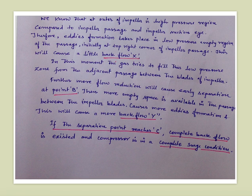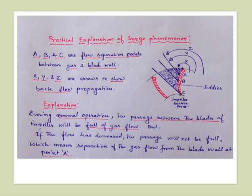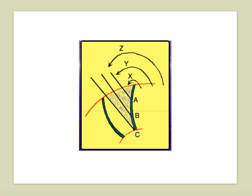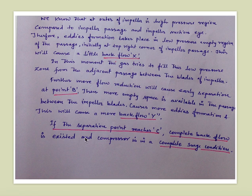If the separation point reaches C, the empty space where eddy formation is occurring and the low pressure region is even bigger. The backflow is now very significant. At point C, complete backflow exists and the compressor is in complete surge condition. When the complete backflow condition starts on the impeller blades due to reduced suction flow to the compressor, this is the complete surge situation. That covers all the concepts of centrifugal compressor surge — thanks for watching.